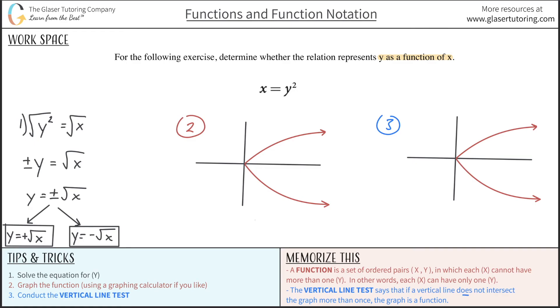Right. It says that if a vertical line does not intersect the graph more than once, then the graph is a function. In other words, if it does intersect the graph more than once, then it is not a function. Okay. So, if I draw a vertical line here, what happens?